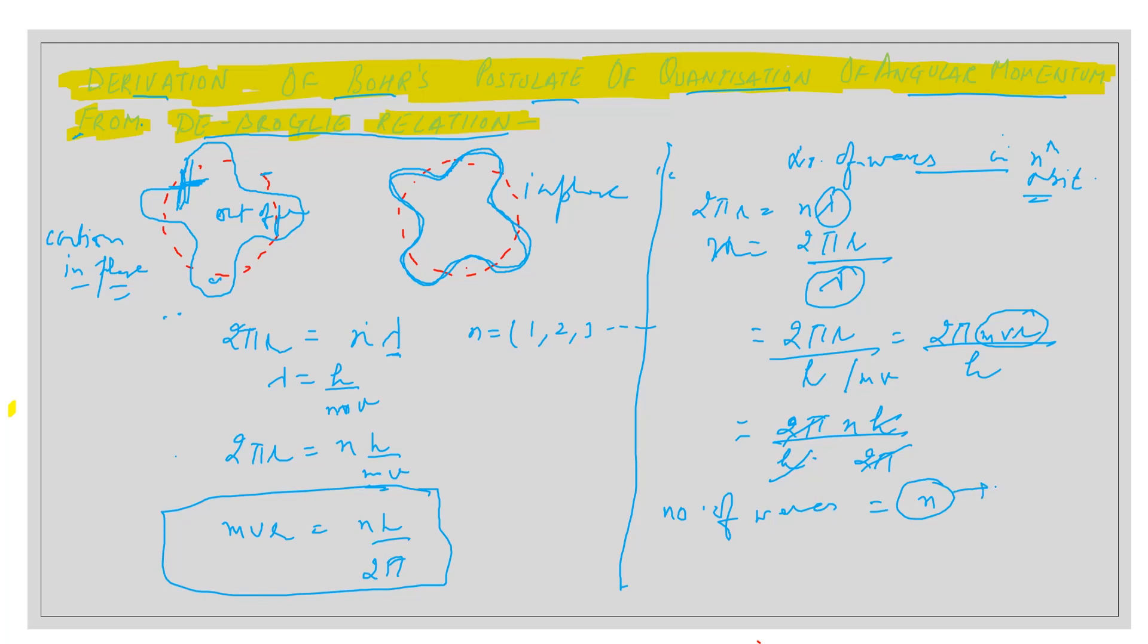n is the number of the orbit. What do you mean? If you are having the third orbit, how many waves will be present? Three waves will be present. If it is the second orbit, how many waves will be present? There will be two waves. The number of waves present in the nth orbit will be equal to n.